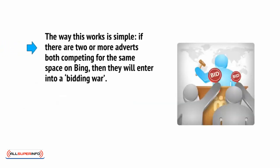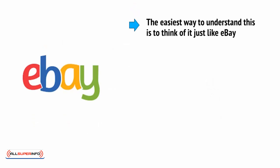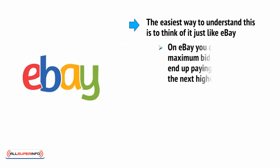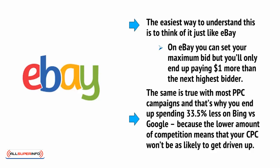The way this works is quite simple. If there are two or more adverts both competing for the same space on Bing, then they will enter into a bidding war. The ad with the highest CPC will be the one that wins and gets shown, but the owner of that ad will only be charged the minimum amount that it needed to win. The easiest way to understand this is to think of it a bit like eBay — on eBay you can set your maximum bid, but you'll only end up paying $1 more than the next highest bidder. And the same is true with most PPC campaigns. That's why you'll end up spending 33.5% less on Bing versus Google, because the lower amount of competition means that your CPC won't be as likely to get driven up.